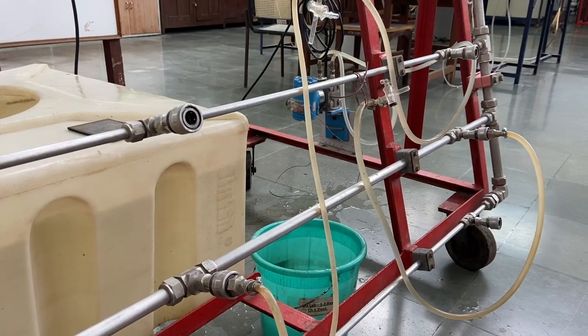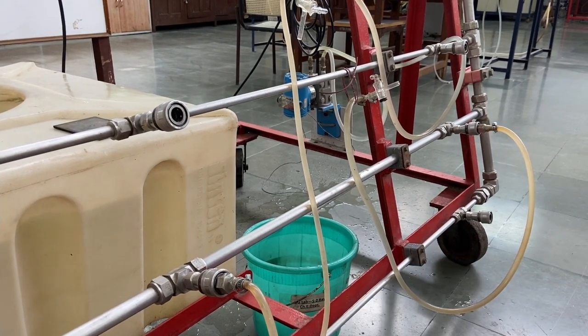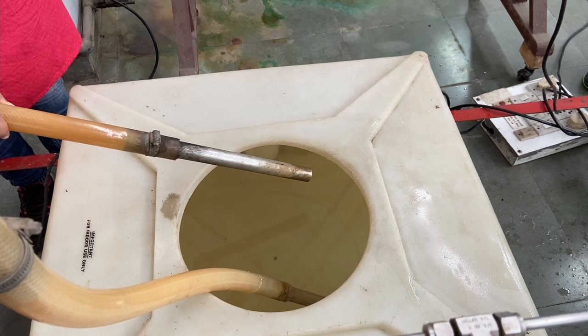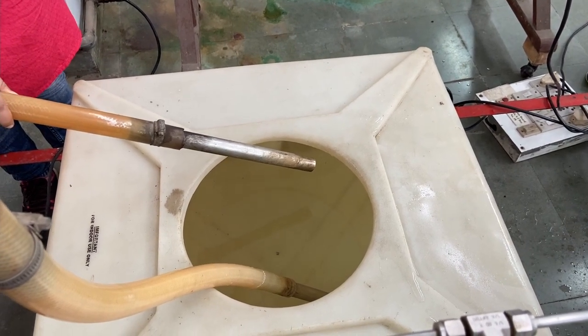Ensure that the pressure tappings are properly connected to the subject pipe without any air bubbles. Then turn on the centrifugal pump and let the water circulate back through the bypass.